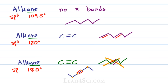Now let's memorize it. I have them memorized as: one, two, three — ane, ene, yne. Ane is one, single bond; ene is two, double bond; yne is three, triple bond.